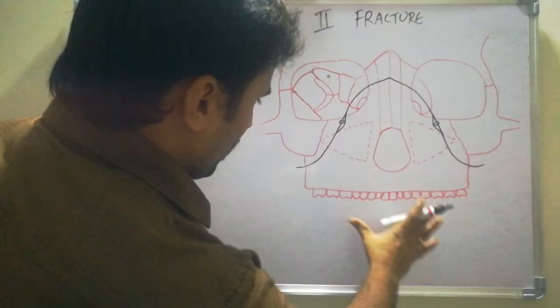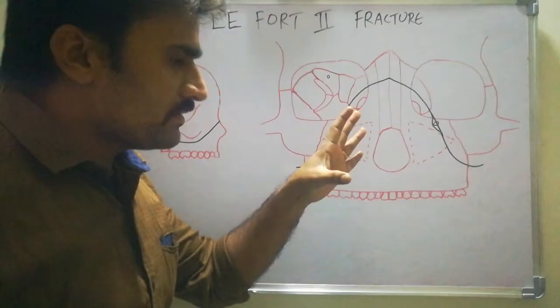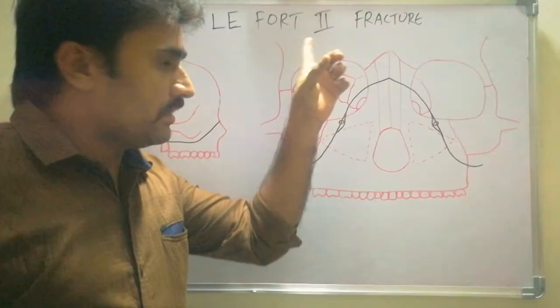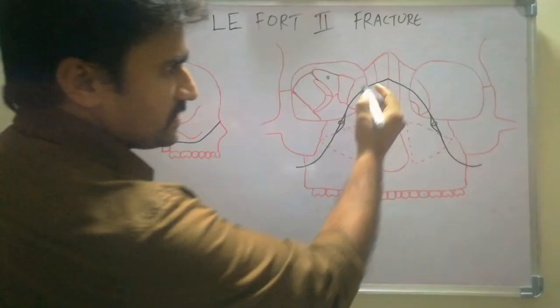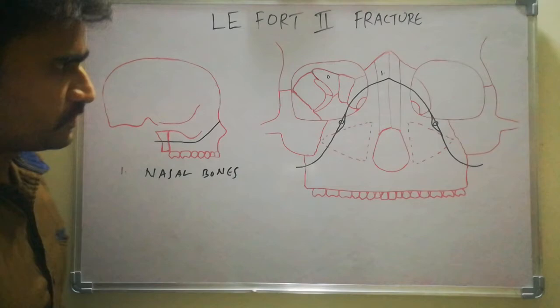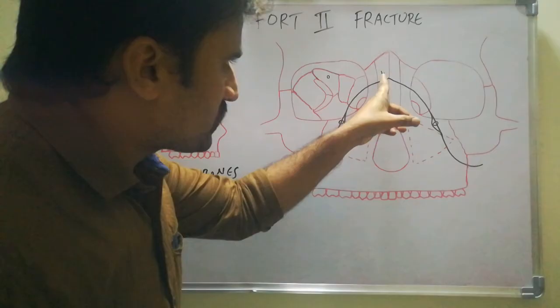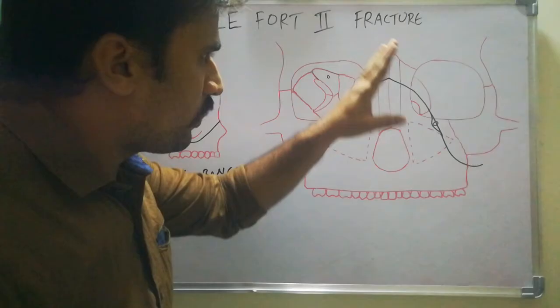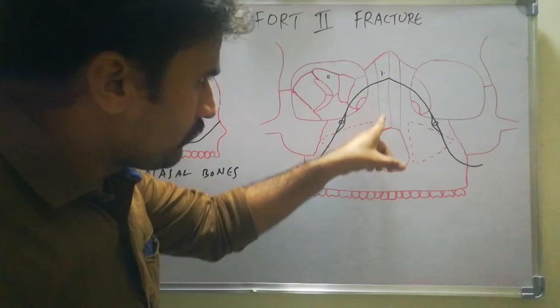Then coming to the fracture line. There are almost seven important points you must understand in the fracture line. The first one is the starting point. The fracture starts from the nasal bones — below the frontonasal suture. It does not involve the frontonasal suture. It starts approximately at the mid-level of the nasal bones.